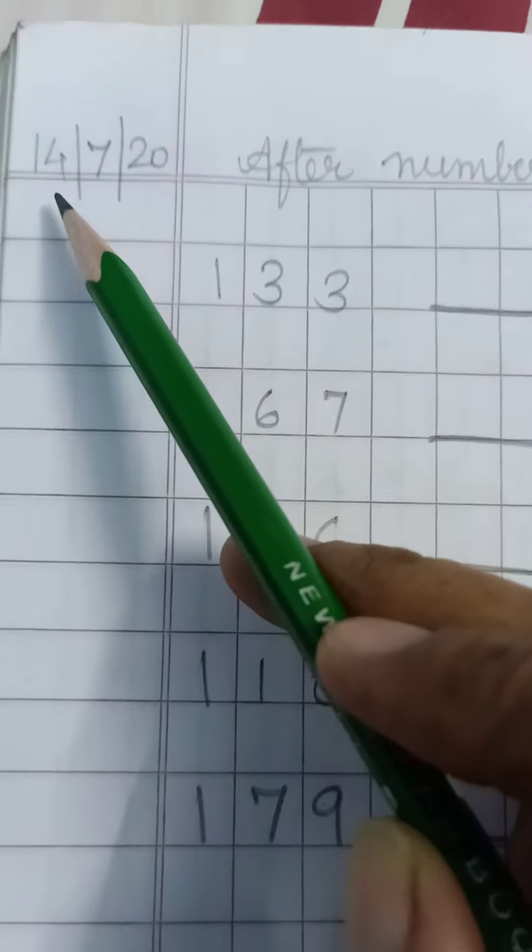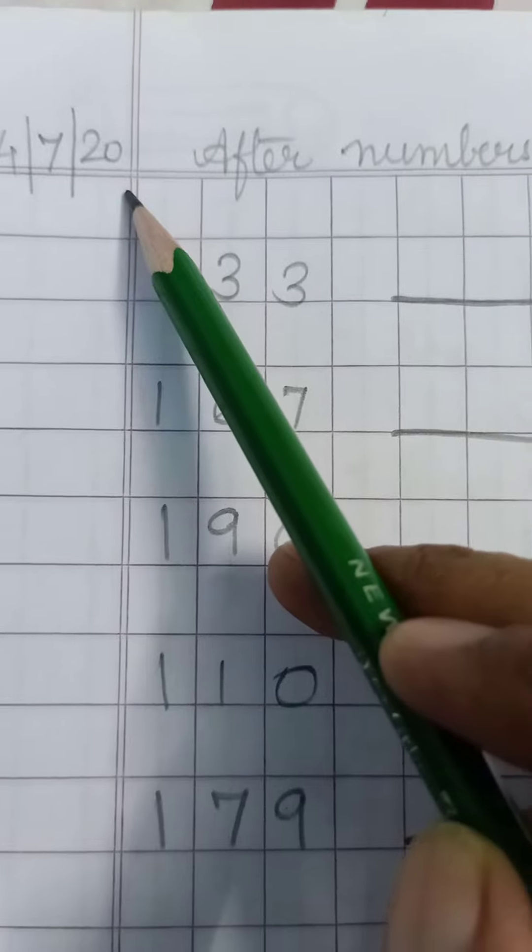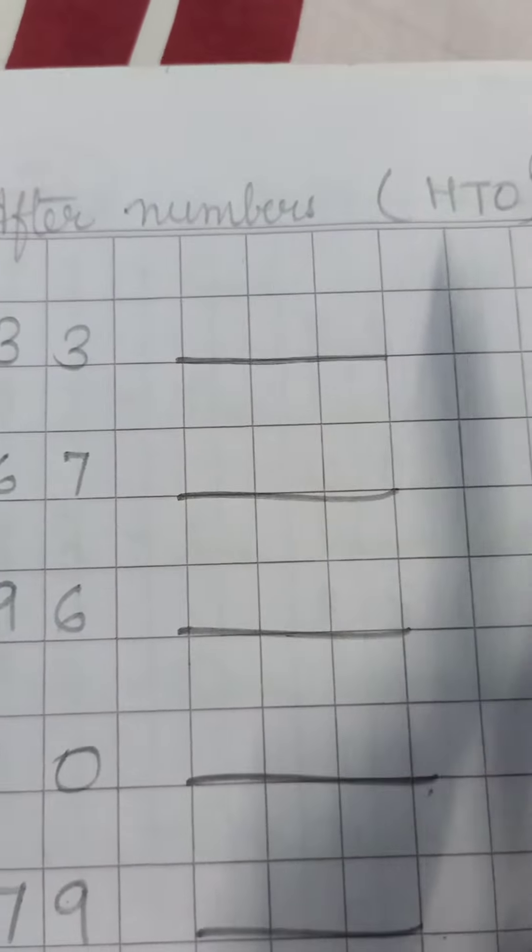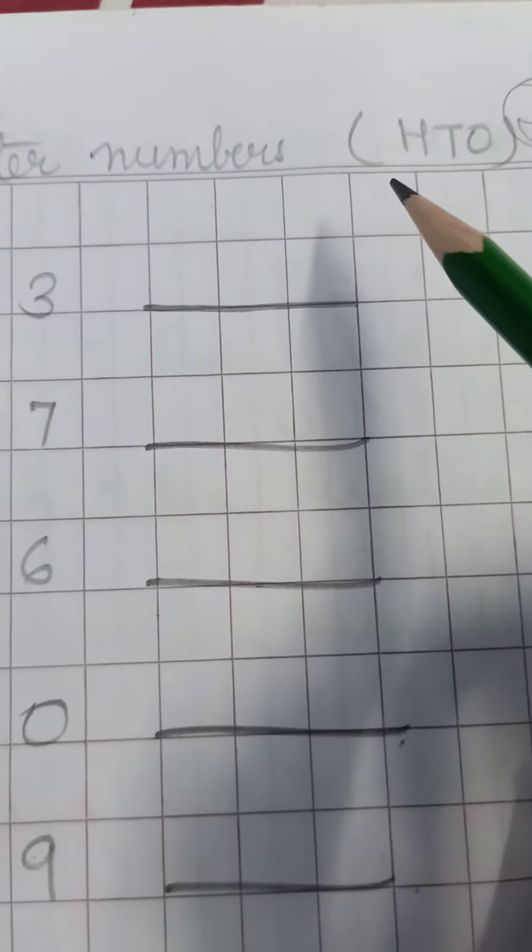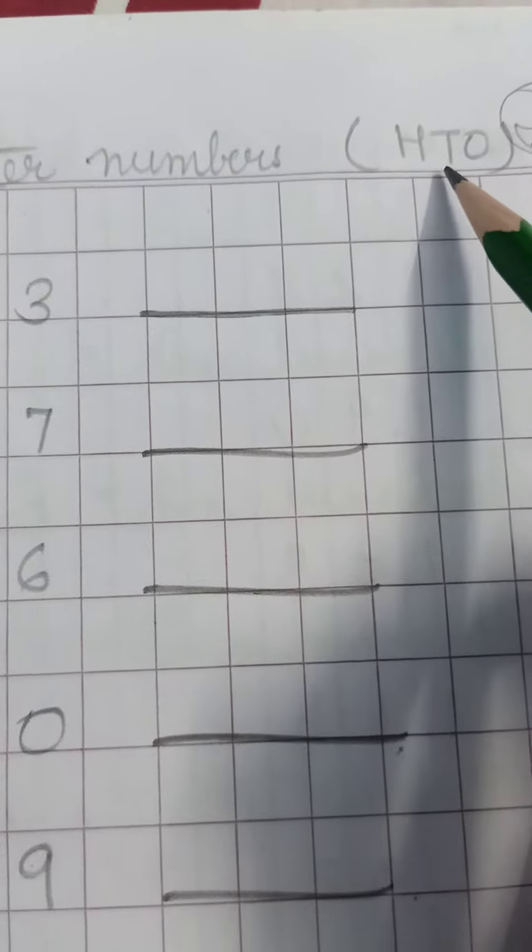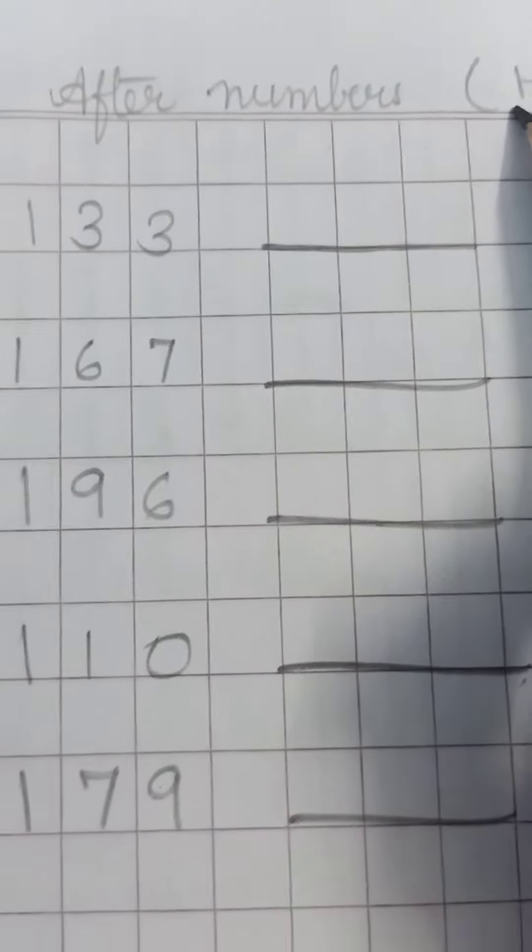Today's date is 14-7-20. Write the heading 'After Numbers' in bracket H T O: ones, tens, hundred. Now some numbers are here.